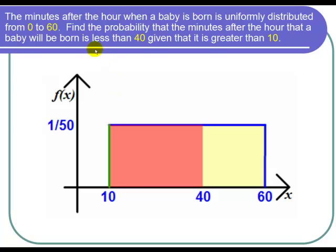Now we want to find the probability that the minutes after the hour will be less than 40. So we want to find the area of the sub rectangle to the left of 40.